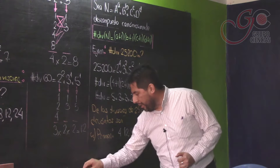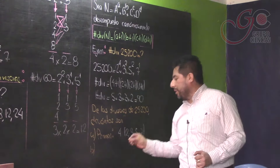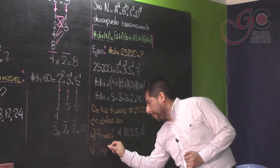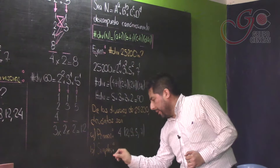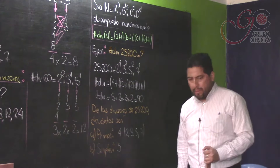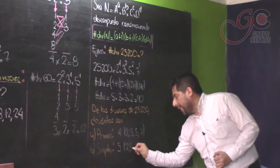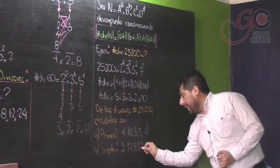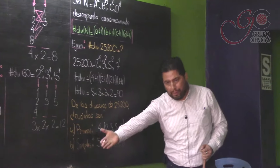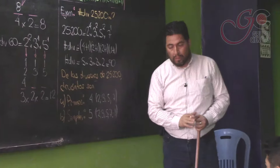¿Cuántos de los divisores de 25.200 son simples? Son 5. ¿Por qué? Porque le agregas la unidad a los primos: es 2, 3, 5, 7 y le estás agregando la unidad. Los simples son todos los primos más la unidad. ¿Estamos de acuerdo?